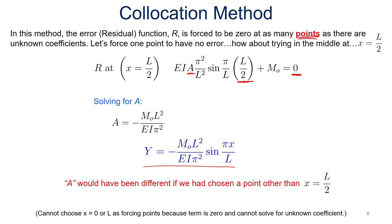Now, A would have been different if we had chosen a point other than x equals L over 2. Note that we also cannot choose x equals zero or L because that would just take the terms to be zero. We couldn't solve for the unknown coefficients. It's got to be someplace where it's not going to take everything to be zero.